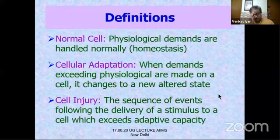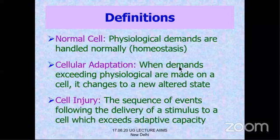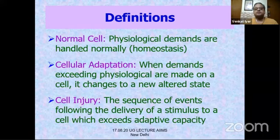Some definitions: A normal cell handles physiological demands normally. In cellular adaptation, demands exceeding physiological limits are made on a cell, and it changes to a new altered state where it is still able to adapt. Cell injury is a sequence of events following delivery of a stimulus to a cell which exceeds the adaptive capacity.